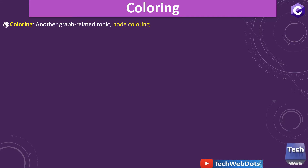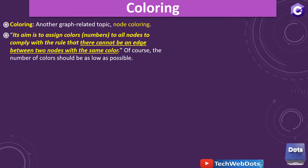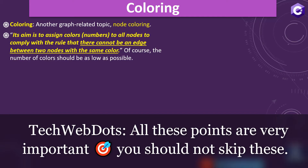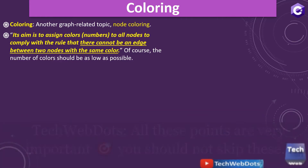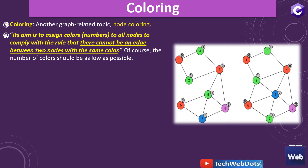Graph coloring is another graph-related topic and we can also call it a node coloring concept. Its aim is to assign colors, or you can say numbers, to all nodes to comply with the rule that there cannot be an edge between two nodes with the same color.